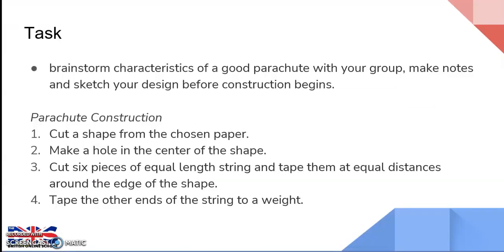Now that you've come up with your design, it's time to construct your parachute. Members of the group will work on this independently but can use shared ideas. Cut a shape from your chosen paper — it can help to make a hole in the center of the shape. Cut lengths of equal string — six is a good suggestion — and tape them at equal distances around the edge, then tape the other ends to your chosen weight to represent the skydiver.